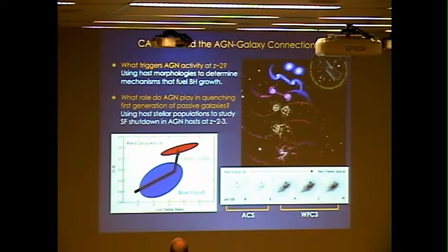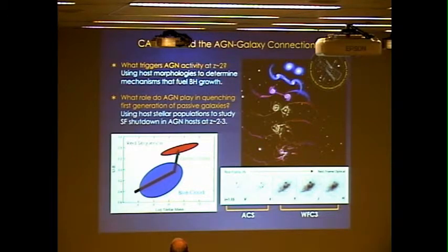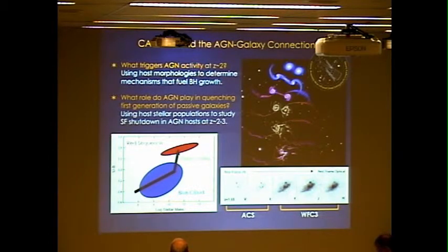I think we've made some great progress in answering the first question, so I'll spend the first half of the talk discussing results regarding the triggering mechanisms in AGN. And then at the very end of the talk, I'll highlight some tantalizing results tying a high AGN fraction to galaxies that are on their way to quenching and moving onto the red sequence.